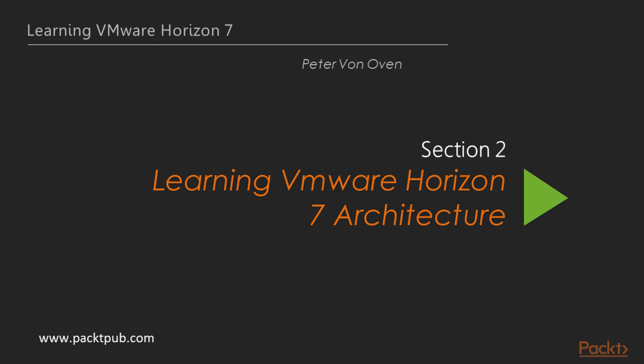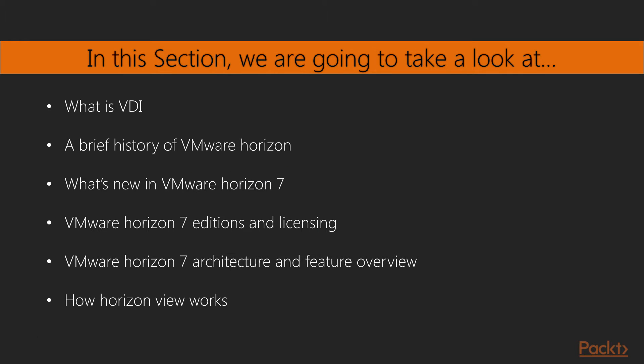Hello, and welcome to the first section of this volume, Learning VMware Horizon 7 Architecture. In this first section, before we talk about the specifics of VMware Horizon, we're going to define what we mean when we use the term Virtual Desktop Infrastructure, or VDI. We're then going to quickly cover a brief history of the VMware VDI products, with the goal of providing some key background of how the solution has evolved and matured to where we are today.